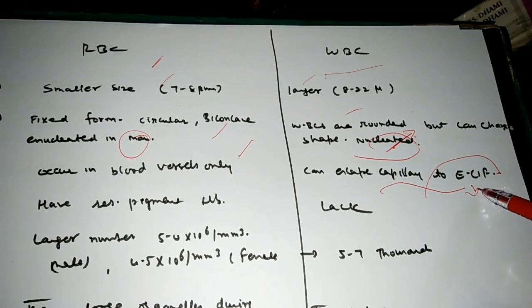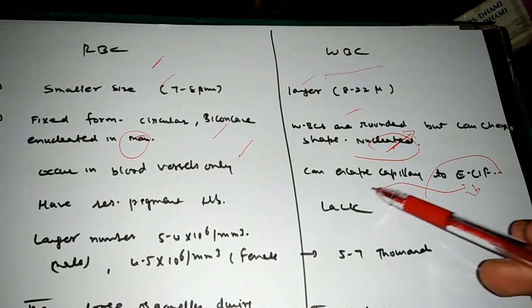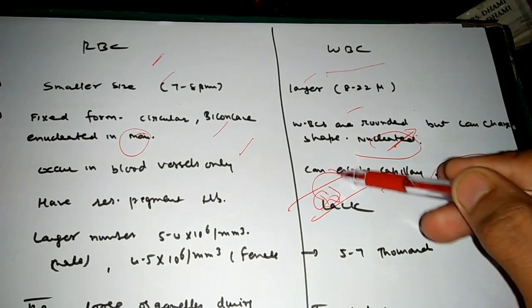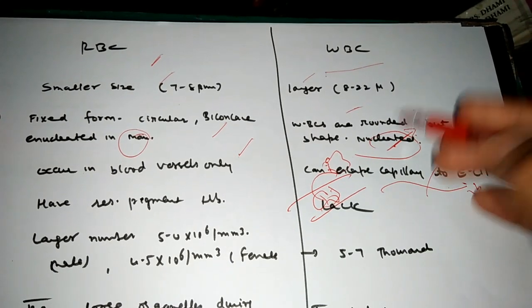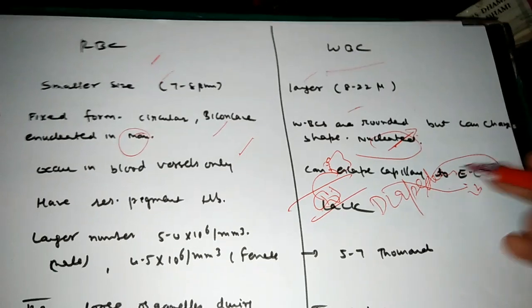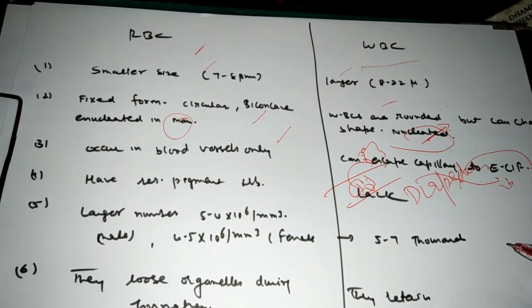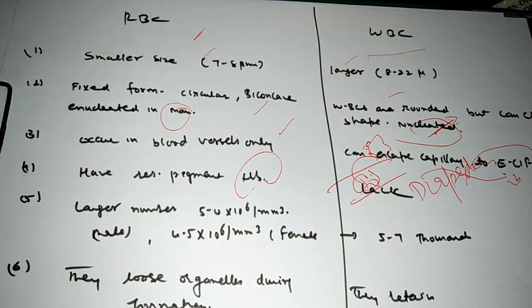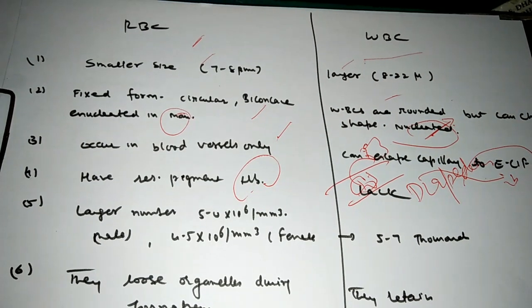But the WBC can escape through the capillary when the infection is very large. Then they reach up to the infected area and this property of squeezing the WBC from the capillary is called diapedesis.